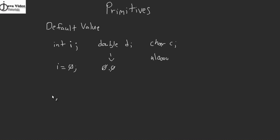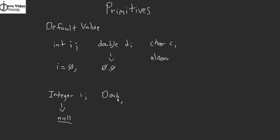If you look at the actual Integer counterpart — the wrapper object — and declare a variable using the object wrapper, the default value is null. Empty. Nothing. Zilch. And the same for Double, the object wrapper — exactly the same thing, null. Same for Character — null. So the object wrappers have no way to assign a default value, because they are objects.